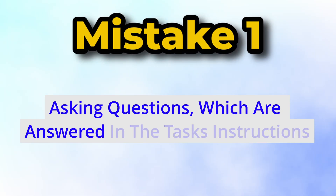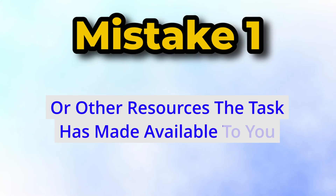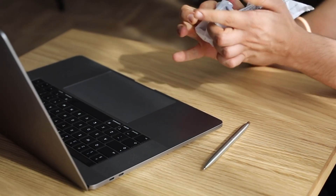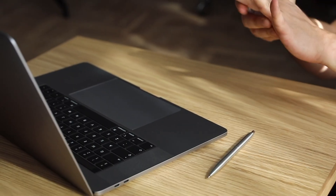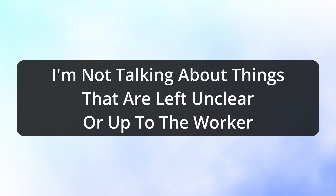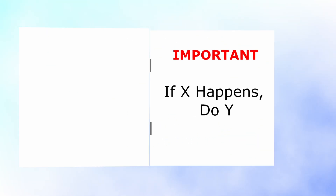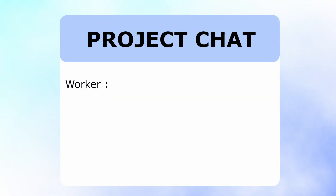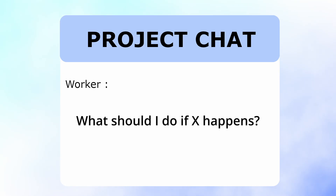The first mistake might seem extremely obvious but so many people do it, and that is asking questions which are answered in the task instructions or other resources the task has made available, such as a list of frequently asked questions. Sometimes things aren't explicitly answered, but I'm talking about cases where the instructions clearly say what to do and someone in the chat is asking about that exact scenario.